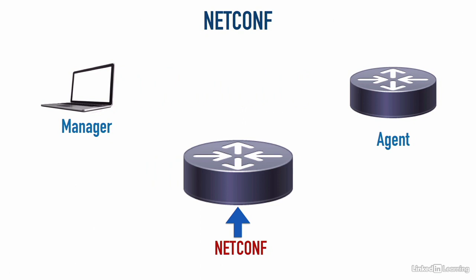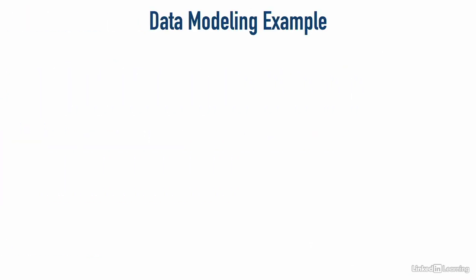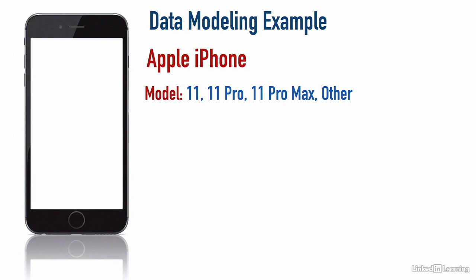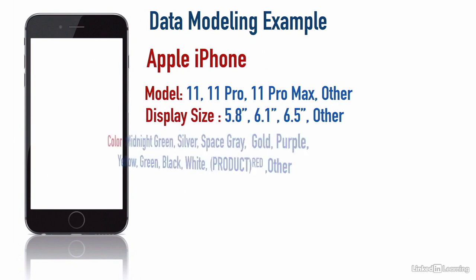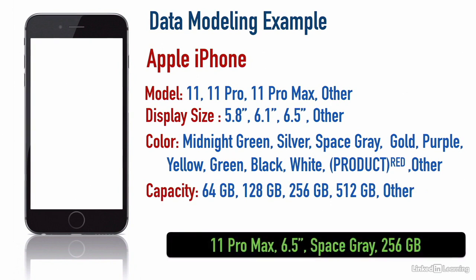Let's do a quick review of Yang data modeling. Earlier in the course, I gave you an example of an Apple iPhone — we could use the Yang data model to describe an iPhone, specifying characteristics like model, display size, color, and storage capacity. My phone, as an example, is an Apple iPhone 11 Pro Max with a 6.5-inch display, space gray color, and 256 gigabytes of storage. That's a way to model an iPhone. With Yang, we're typically going to model the characteristics of a network device.